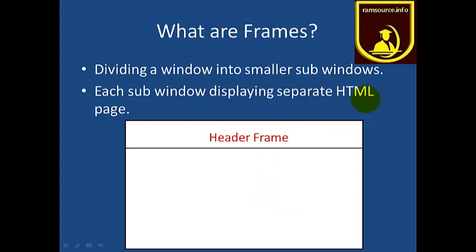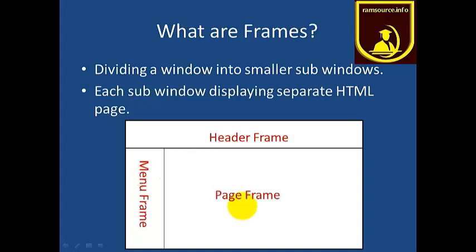For example, your website can have a header frame — the top portion displayed separately. Next is a menu frame, which shows a side list of menus. And finally, the page frame — the main content page. So you can split your entire page into separate parts, each a different portion.